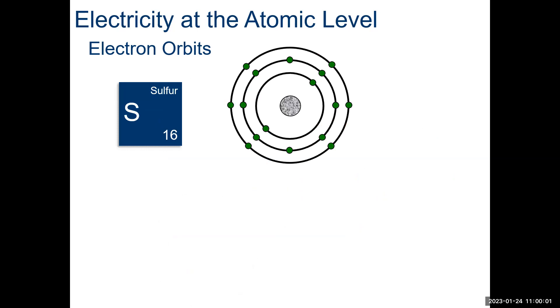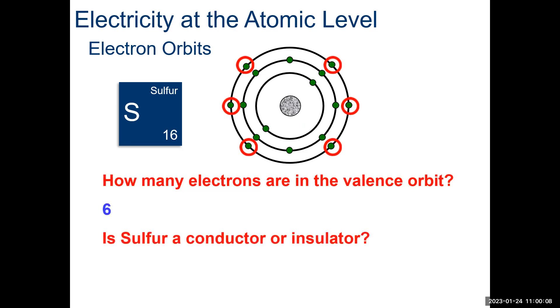So, sulfur has six. There they are. Is sulfur a conductor or an insulator? Sulfur is pretty stable. It's got six out there. It's not easy to knock them out. They are kind of stuck. It is an insulator.